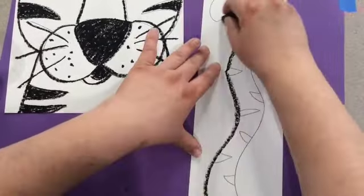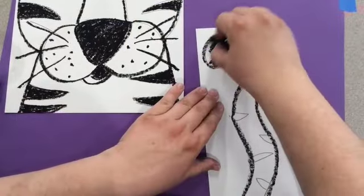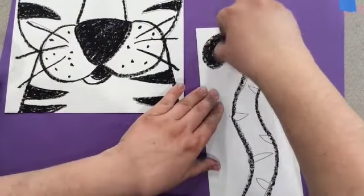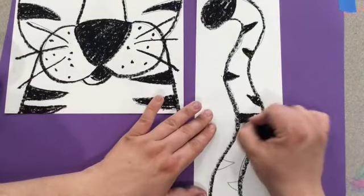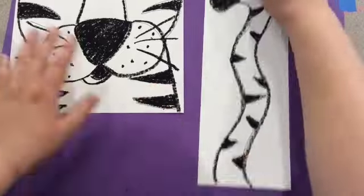When your tiger's done, bring over the tail and do the same thing. Trace all of your pencil lines, color in the end of the tail black, and then you can also color in those stripes. And then we'll see you next time.